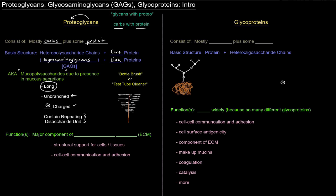And so these are just the glycosaminoglycans. And so these glycosaminoglycans are connected to a core protein, and oftentimes there are linked proteins as well. So a proteoglycan's structure looks kind of like a bottle brush, or a test tube cleaner.